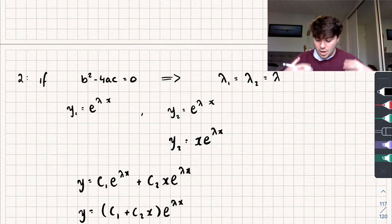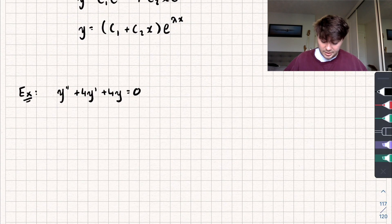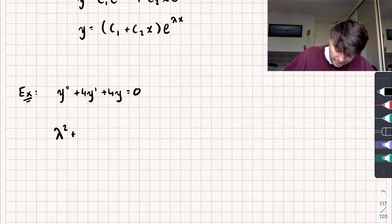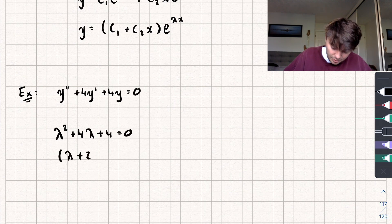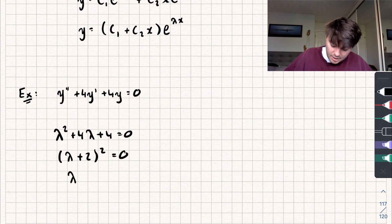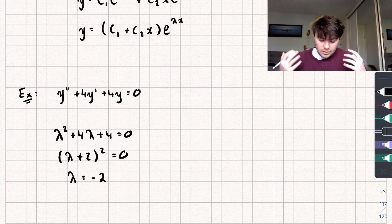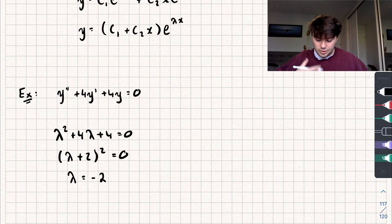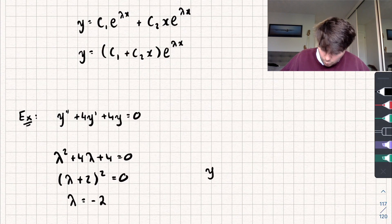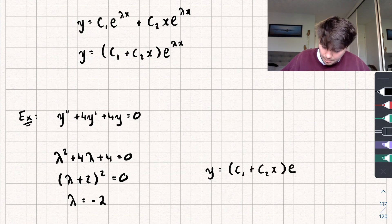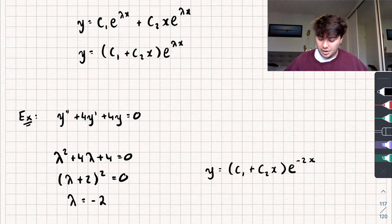Here's an example for the repeated root case: the auxiliary equation is λ² + 4λ + 4 = 0, which factorizes as (λ + 2)² = 0, giving λ = −2. Using the general solution formula, we get y = (c₁ + c₂x)e^(−2x), and that is the general solution.